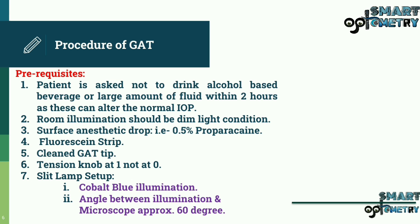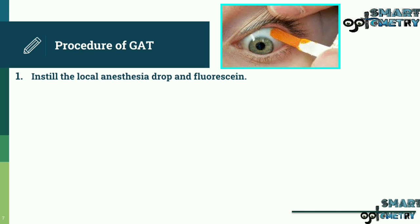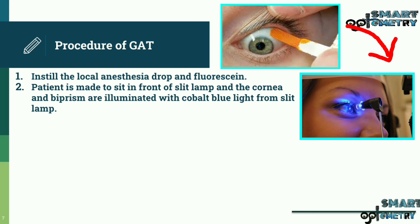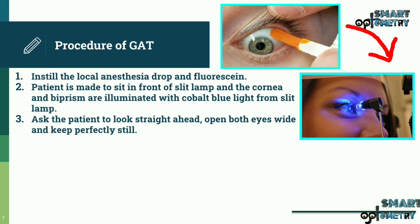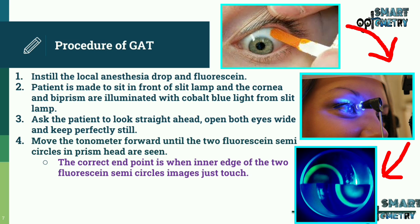Slit lamp setup requires cobalt blue illumination with the angle between illumination and microscope at approximately 60 degrees. Instill the local anesthetic drop and fluorescein. The patient is made to sit in front of the slit lamp, and the cornea and biprism are illuminated with the cobalt blue light from the slit lamp.